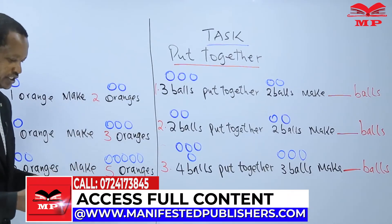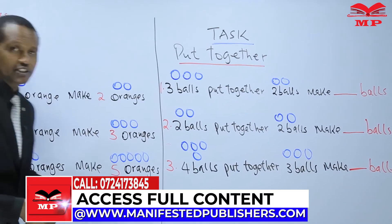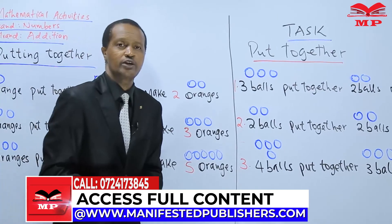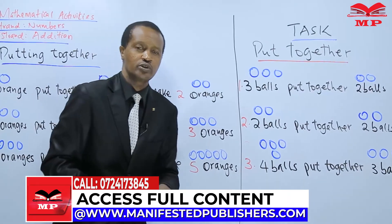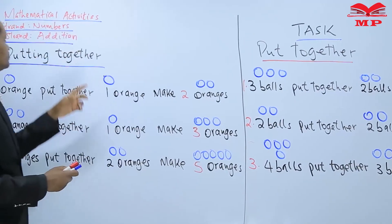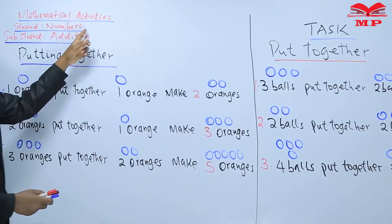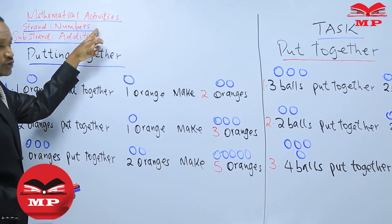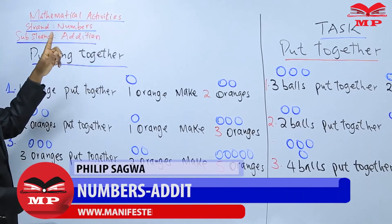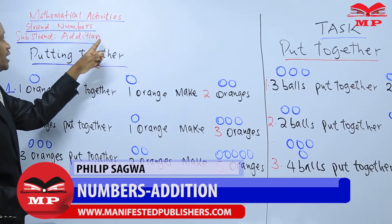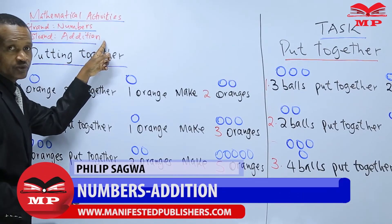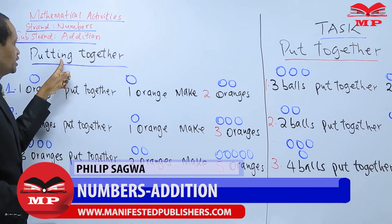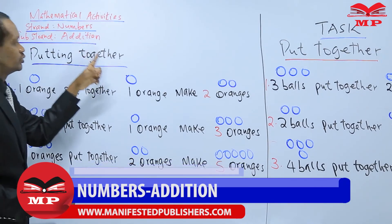Make sure you do the assignment. Put together three balls and two balls. Number two: put together two balls and two balls. Number three: put together four balls and three balls. How many balls do you get in each case? Thank you for attending our today's lesson. Learners, we will continue in our next lesson with the strand numbers and continue to learn how to carry out addition, which means putting together. Bye-bye.